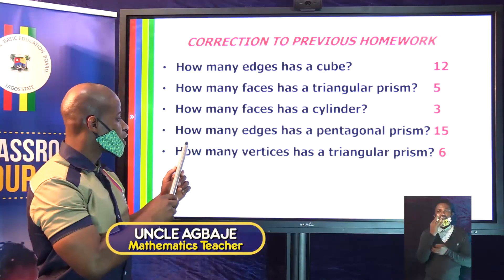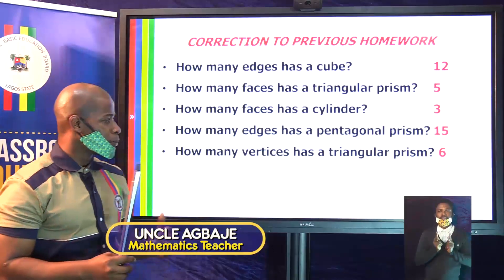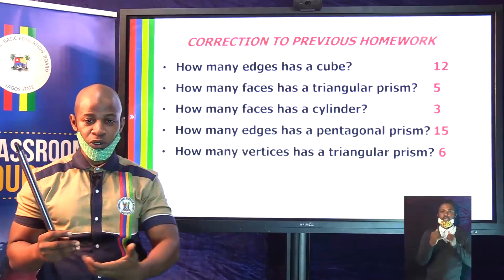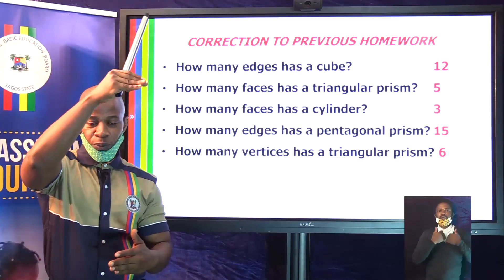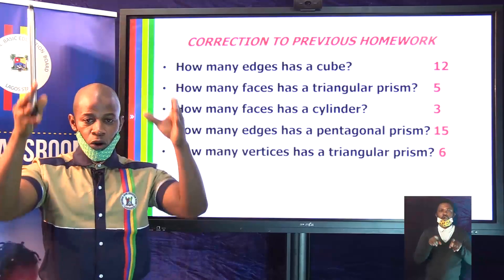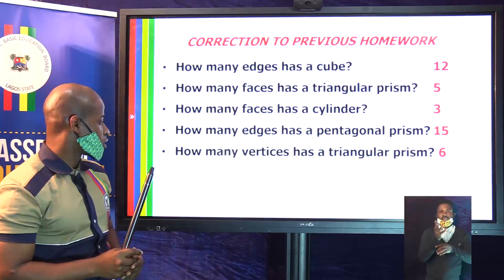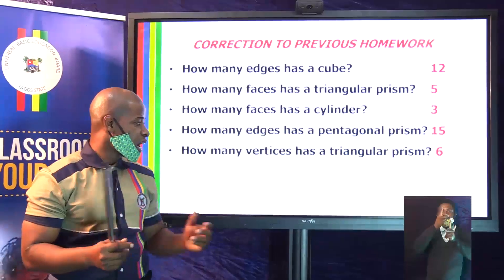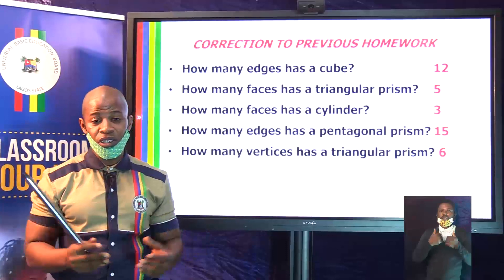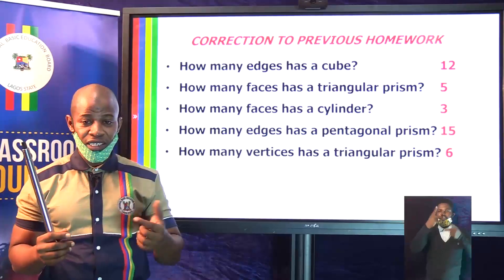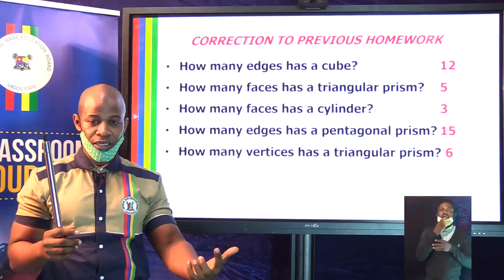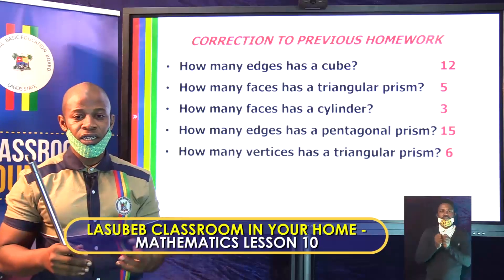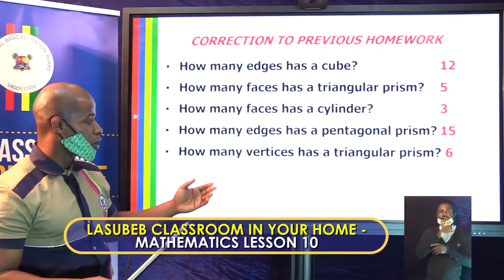The fourth question says how many edges has a pentagonal prism? A pentagonal prism has 15 edges. The base has five edges, the top has five edges corresponding to each of the sides, and there are also five edges connecting these together making 15. The last question says how many vertices has a triangular prism? A triangular prism has six vertices — three at the base and three at the top.